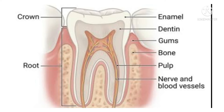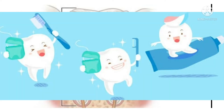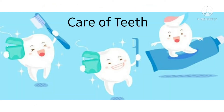Below the enamel lies the hard dentine. Inside the dentine lies the pulp, which is very soft and full of nerves and blood vessels. The pulp forms the central part of the tooth.